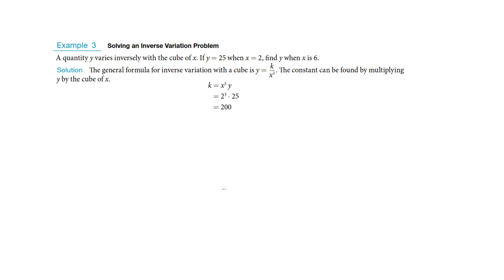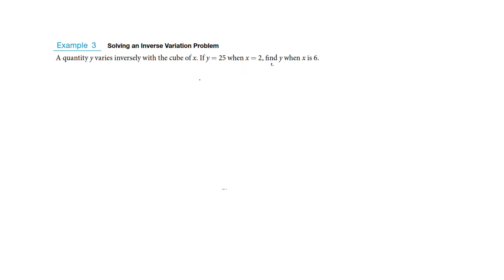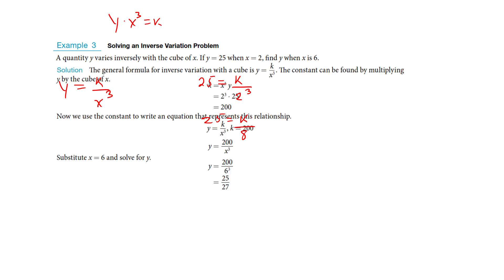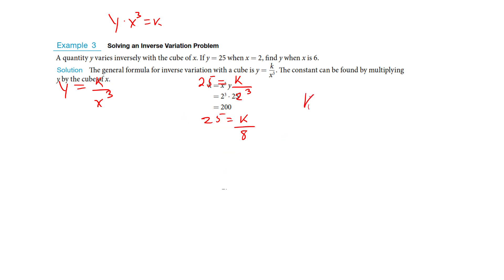Now let me look for the constant of variation. I know y varies inversely with the cube of x, so y equals k over x³. I know that y is 25 when x is 2, so that's 2 to the third, which is 8. I've got 25 equals k over 8, so my k is going to be 200.